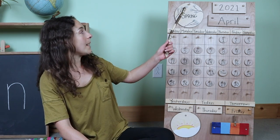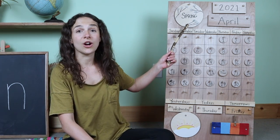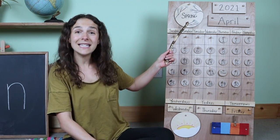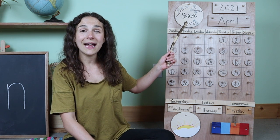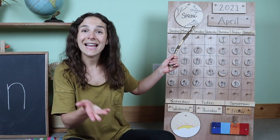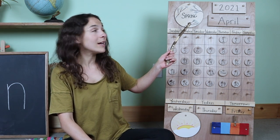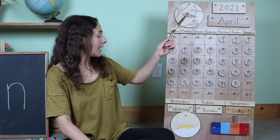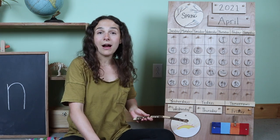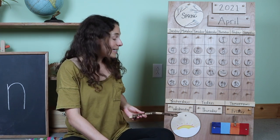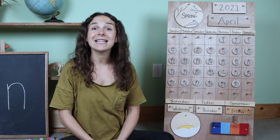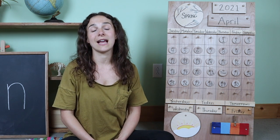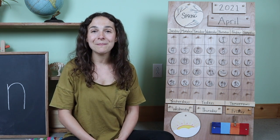When I travel back up to the top of the chart, this says the season. Do you know what the season is right now? Spring. That's right, it's springtime. And when I travel back down to the bottom, this is a picture of the weather. So that means it's time to sing the weather song together. Will you sing with me?